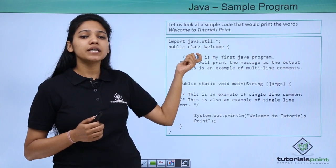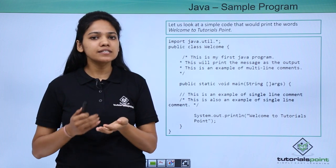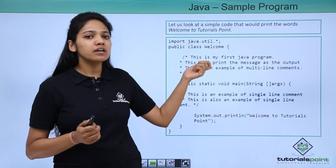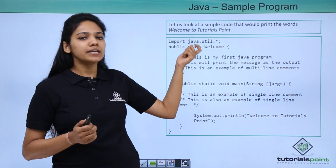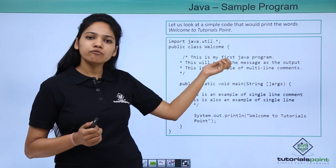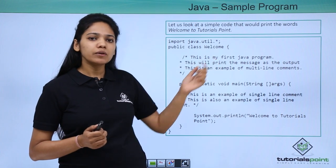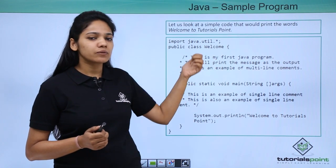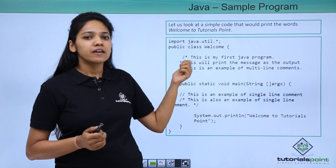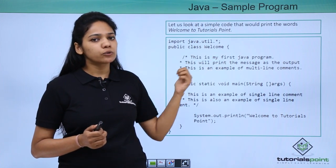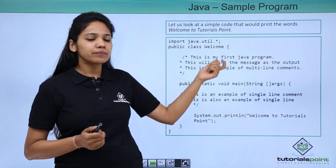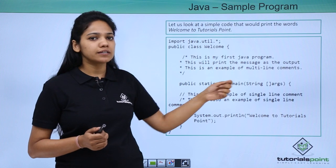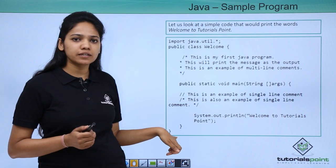Next we provide a keyword. A keyword is nothing but a word that has a predefined meaning. So here, to create a class, we provide the keyword class followed by a class name. Here the class name is Welcome where the first letter is uppercase — W is uppercase. If you provide a lowercase letter, it will throw an error. Once you provide the class name, you provide curly braces. If you open a curly brace, you should also close it.